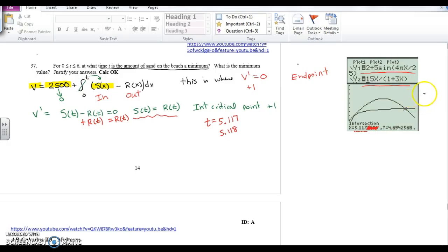This is a point you must check. The other places you must check are your endpoints when T equals 0 and when T equals 6.